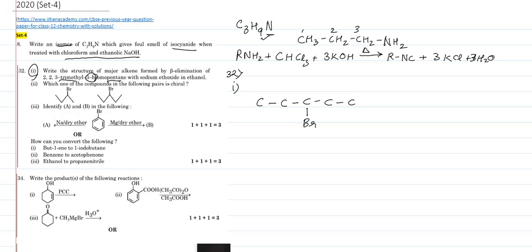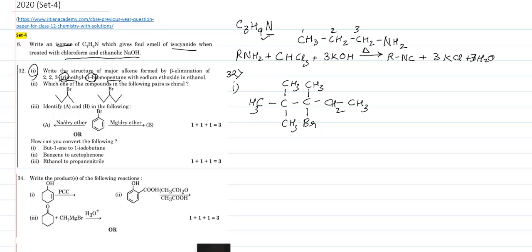At the third position you have a bromine atom — that is 3-bromopentane. At the second and third positions you have methyl groups: two methyl groups at C2 and one methyl group at C3. Fill in the rest of the hydrogen atoms. Now, they've actually given us a lot of information. We're not even asked what happens — we just need to figure out the major alkene formed.